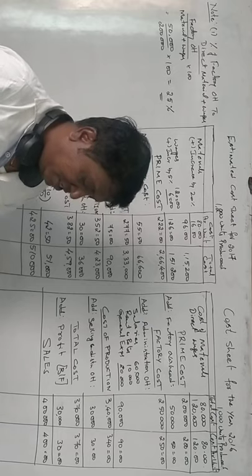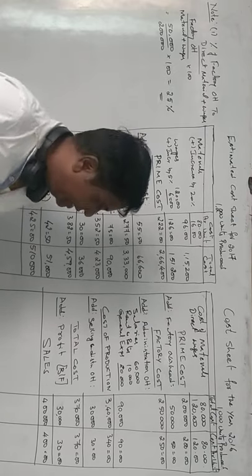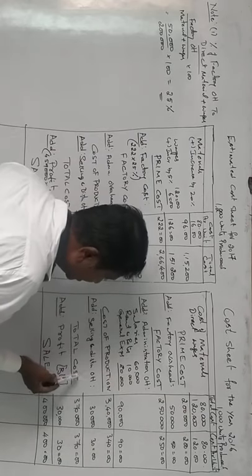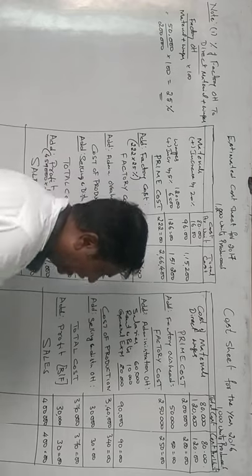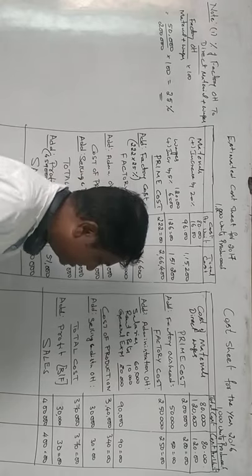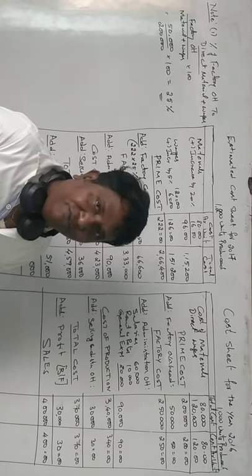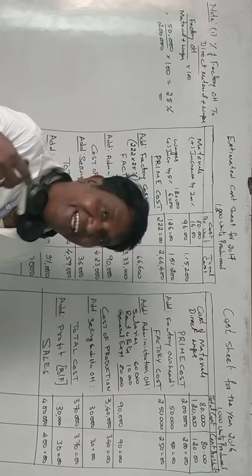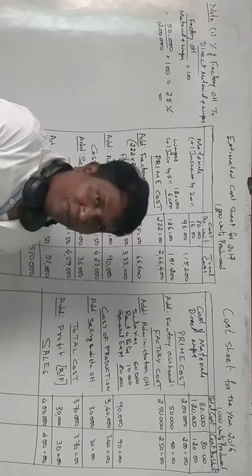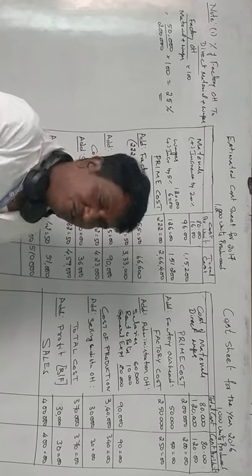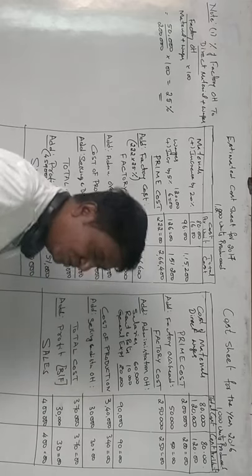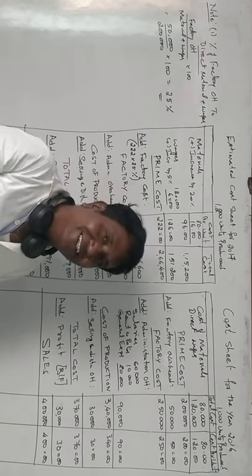To the total cost, we add profit. We don't know the profit, but sales are given. The cost of manufacturing 1,000 machines was 3,70,000 rupees — that is 370 rupees per machine — and we sold it for 4,00,000 rupees. That means we got 30,000 rupees of profit for selling 1,000 machines — 30 rupees profit per unit — and the selling price becomes 400 rupees. This is how we prepared the 2016 cost sheet.